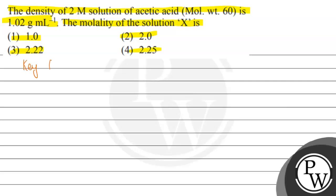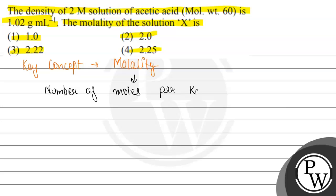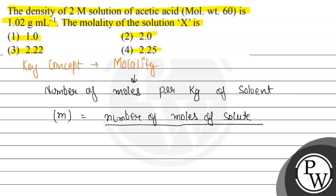Let us see this question's key concept. The key concept of this question is molality. Molality is the number of moles per kg of solvent. The formula for molality, which we represent as small m, comes out to be: number of moles of solute divided by mass of solvent in kilograms.